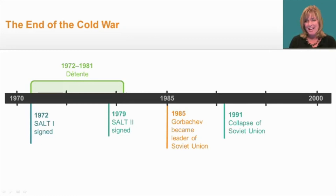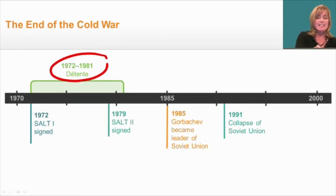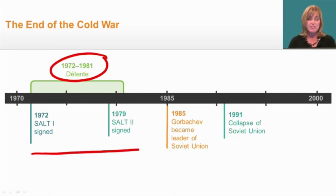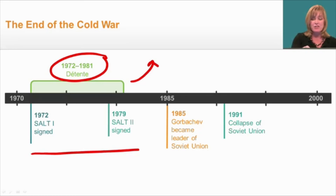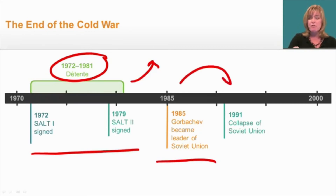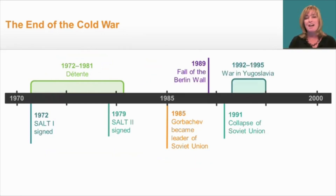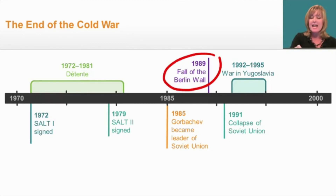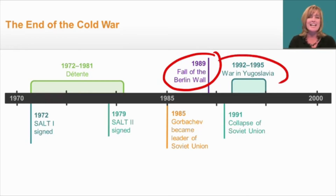Let's take a look at our timeline. We started off by learning about detente — that time of decreasing tensions between the U.S. and the Soviet Union — during which two treaties were signed. In 1980, President Reagan became president and tensions increased again, until in 1985 Gorbachev became premier of the Soviet Union. His reform policies eventually led to the collapse of the Soviet Union. The end of the Cold War had other important effects as well: in 1989, the Berlin Wall finally came down, and eventually we saw the reunification of Germany. And in 1992, the collapse of communism resulted in a war in Yugoslavia. Thank you.